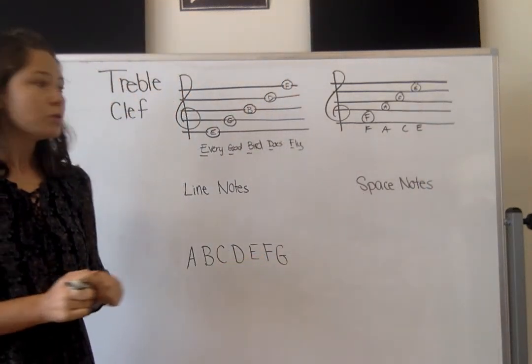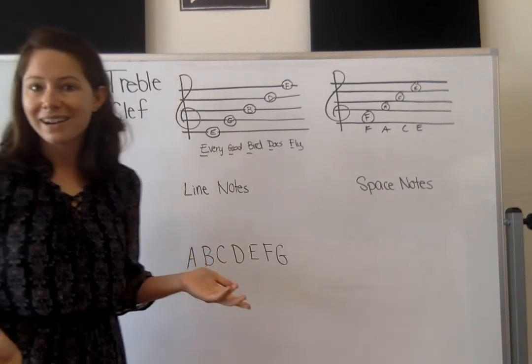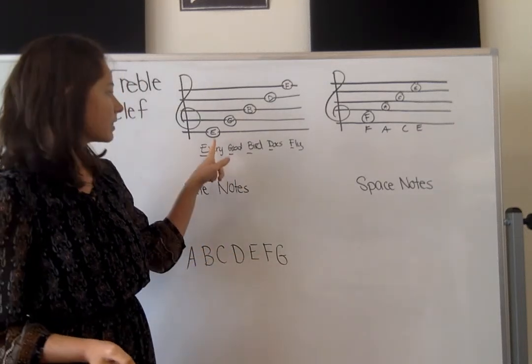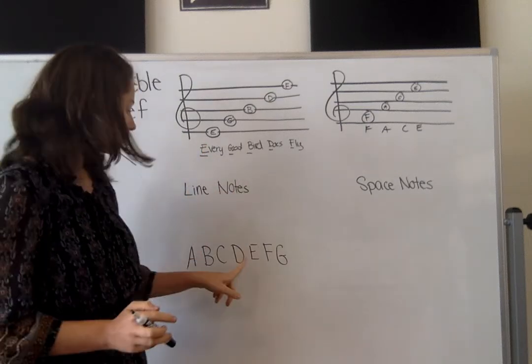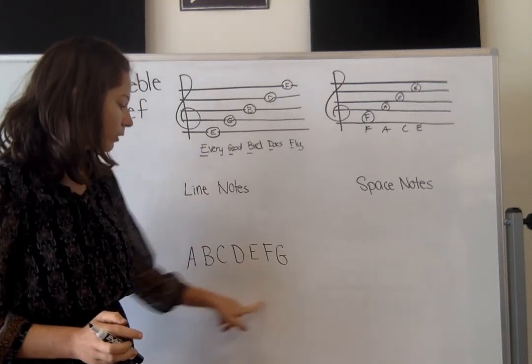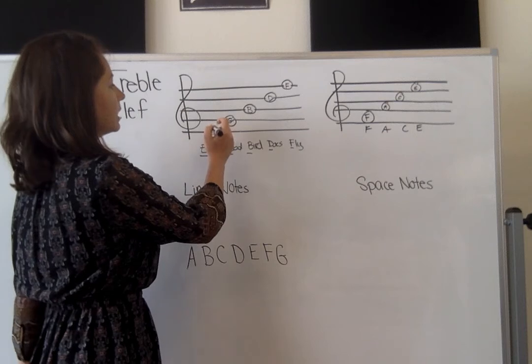And again, if you put them all together, you are in alphabetical order. Starting at the bottom, you're not starting at the beginning of the alphabet, but you can start anywhere in your alphabet as long as you go in order, and always loop back to the beginning. So E,